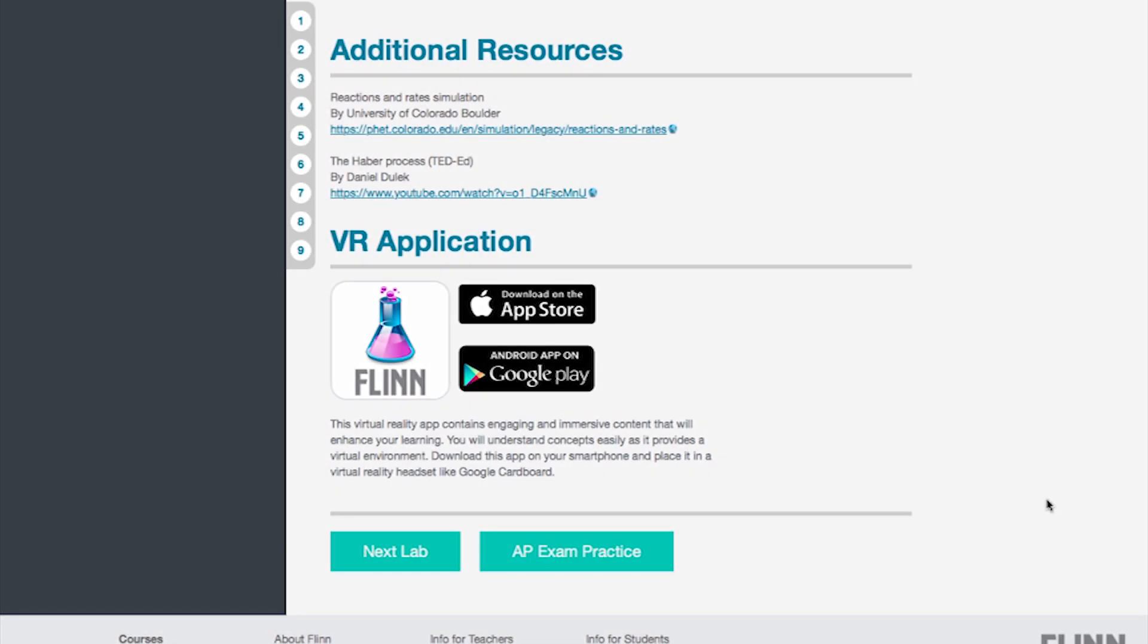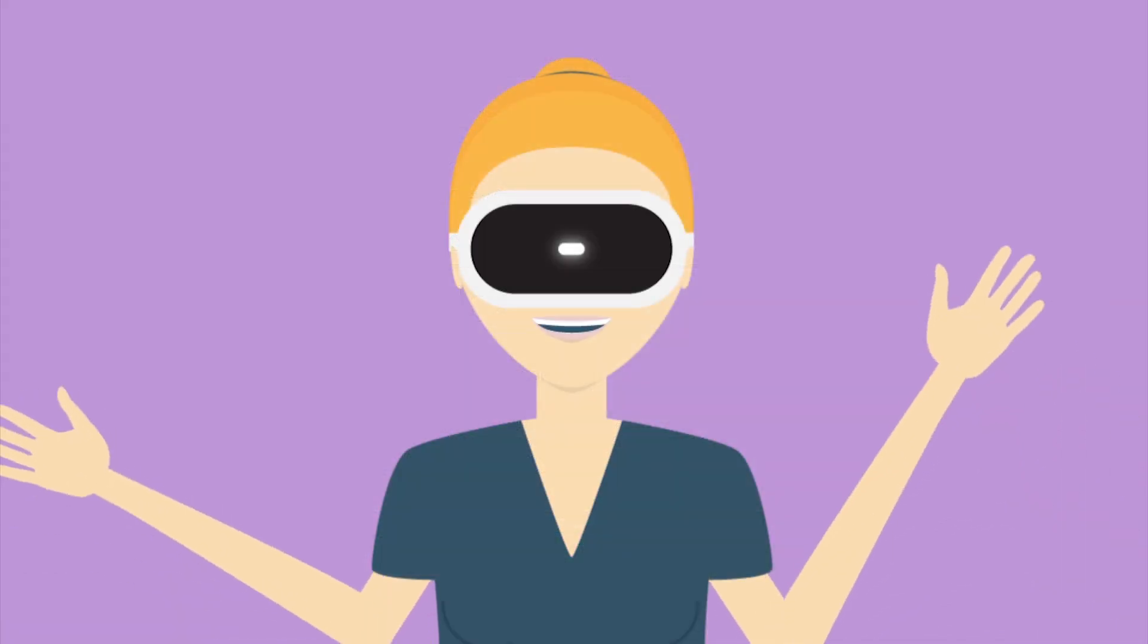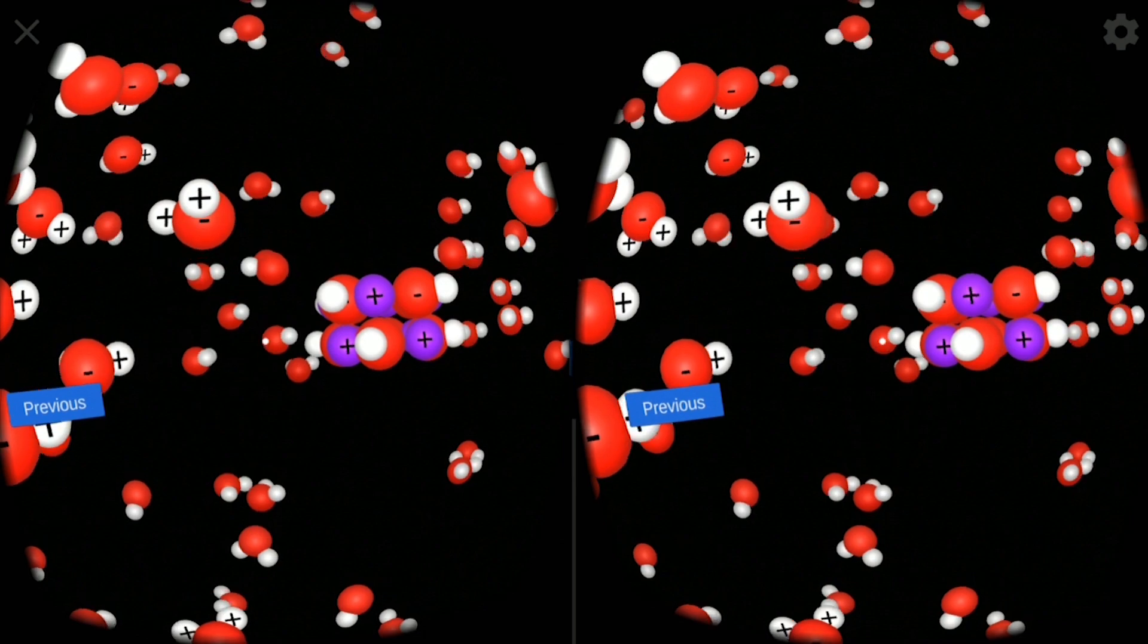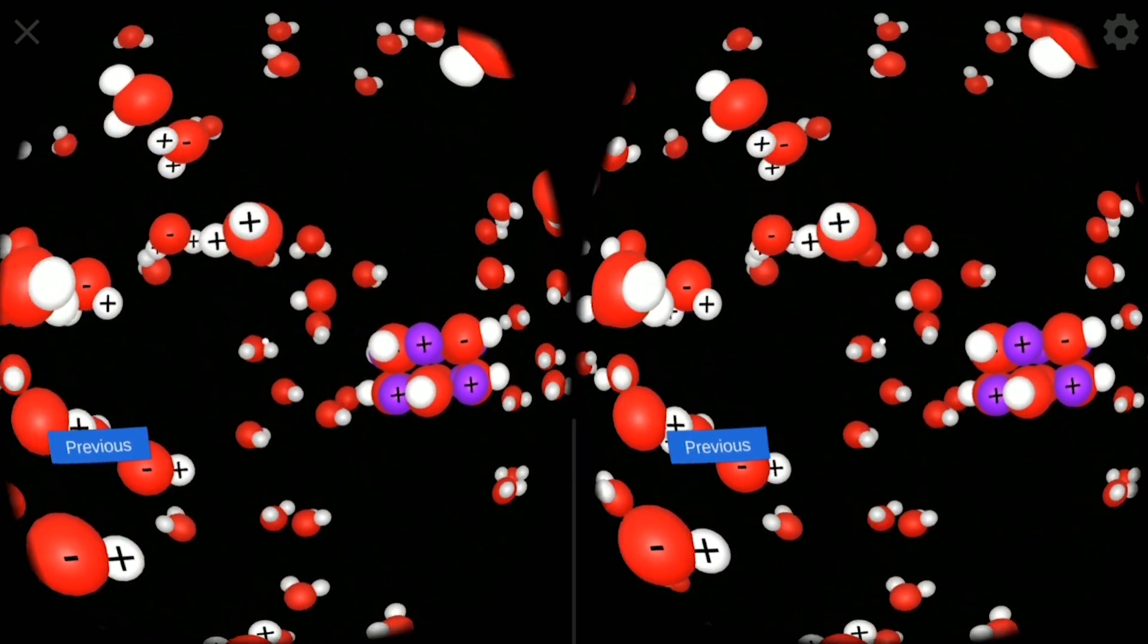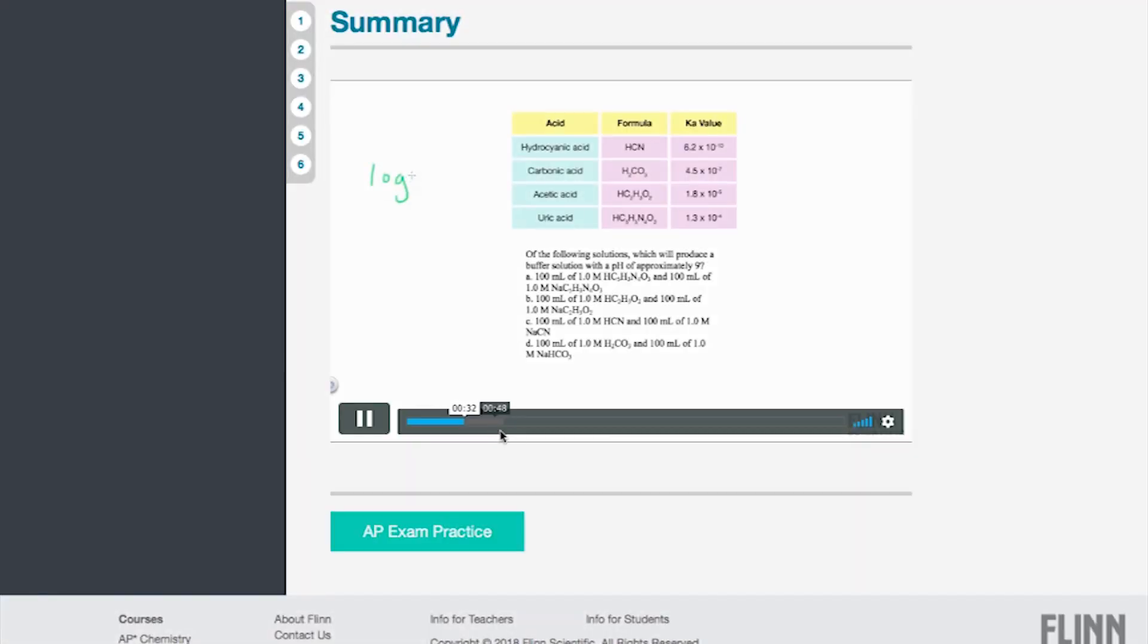For an atomic level view of things, students can use their smartphones to get inside the beaker by watching virtual reality simulations.